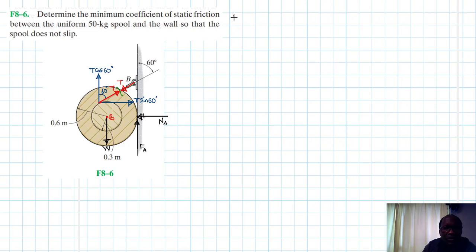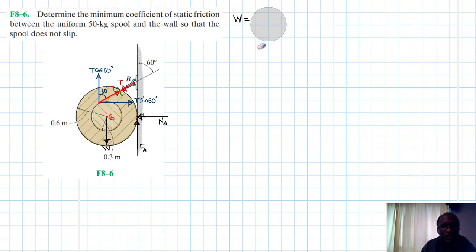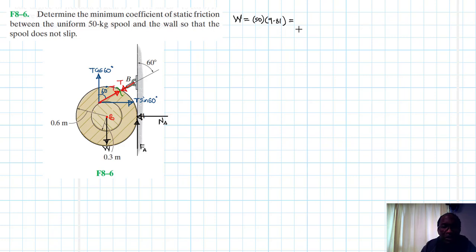The weight W equals mg: 50 times 9.81, which gives us 490.5 Newtons.